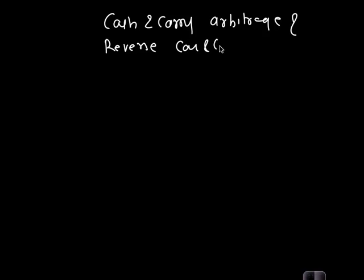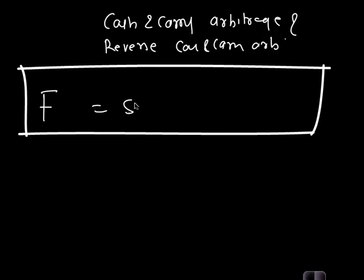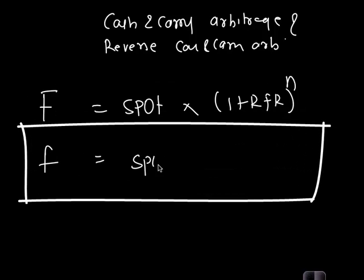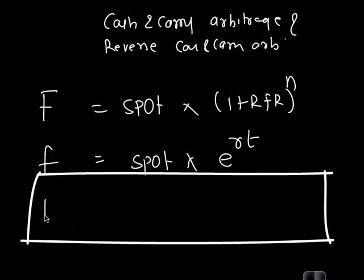Now a little bit on forwards and futures. At both level 1 and level 2, we looked at cash and carry arbitrage and reverse cash and carry arbitrage. Using these two, we proved that a no arbitrage forward price should be spot × (1 + RFR)^n. On a continuous compounded basis, the equation would be spot × e^(RT). If you have a dividend yield, it would be spot × e^((R - dividend yield) × T). If you have a discrete dividend, reduce the present value of the dividend from spot price.